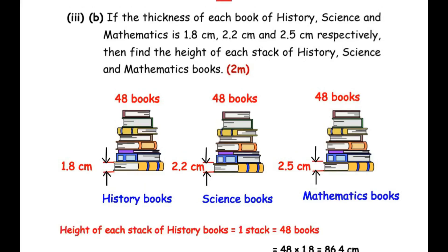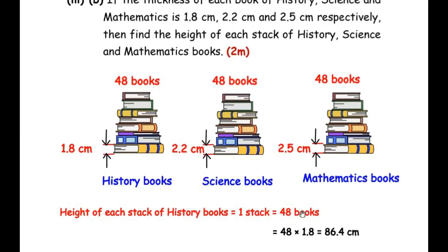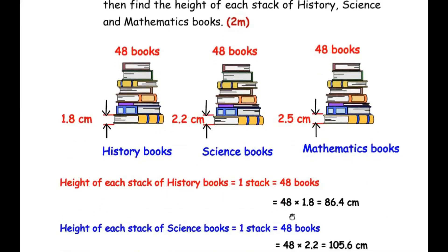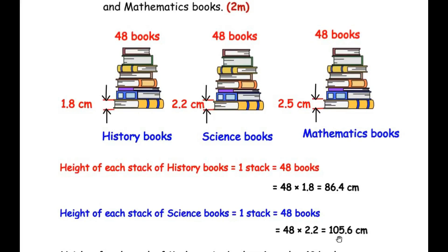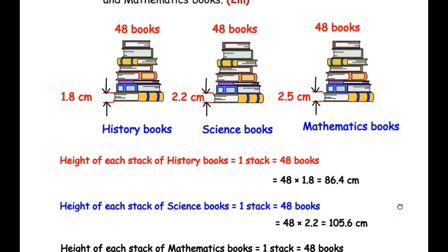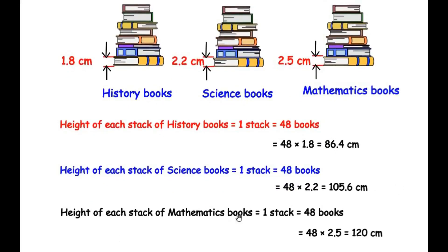The height of each history stack = 48 × 1.8 = 86.4 cm. The height of each science stack = 48 × 2.2 = 105.6 cm. The height of each mathematics stack = 48 × 2.5 = 120 cm. These are the total heights of the stacks for history, science, and mathematics books respectively.